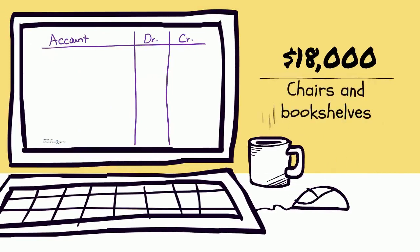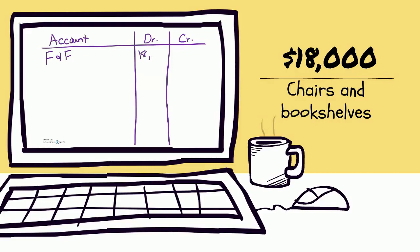The last transaction was to purchase some cozy chairs and bookshelves for eighteen thousand dollars. We got chairs and bookshelves — that sounds like an asset — and they're increasing. I would use an account called Furniture and Fixtures, or F&F for space sake. That's a type of asset that's increasing, so we debit it for eighteen thousand dollars. We paid cash, so another asset is decreasing — we credit Cash for eighteen thousand dollars. One asset went up, one asset went down, the debits equal the credits, and the accounting equation is happy.